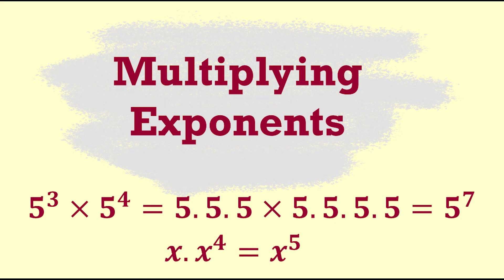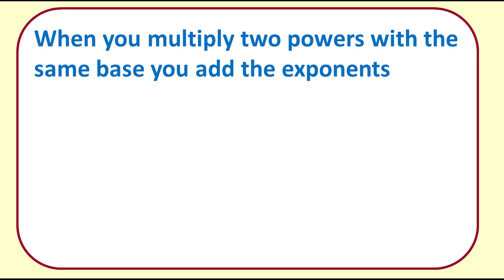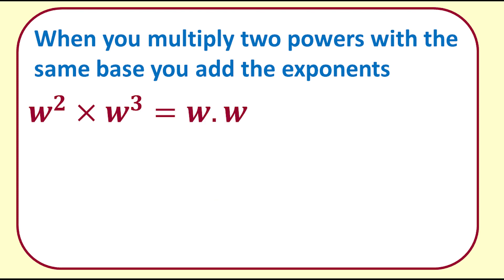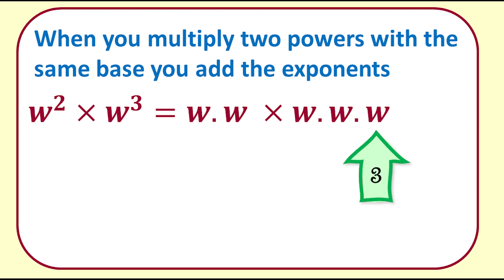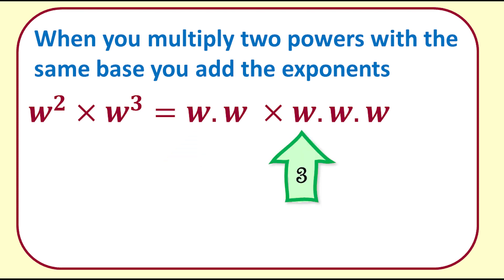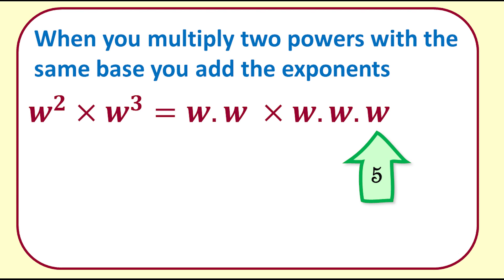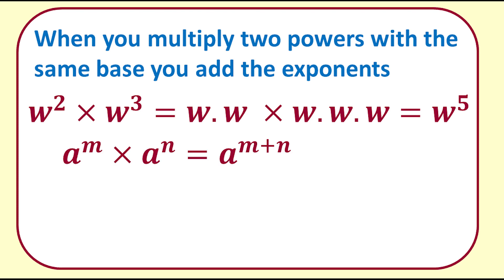Now that we know about notation, we will multiply the exponents. When you multiply two powers with the same base, you add the exponents. So w to the 2 times w to the 3 is w times w times w times w times w — two lots of multiplying w and three lots of multiplying w, which ends up with 5 lots of multiplying w, written as w to the 5. Once you understand what is happening, you can just add the exponents and don't need to write it all out. So: a to the m times a to the n equals a to the m plus n.